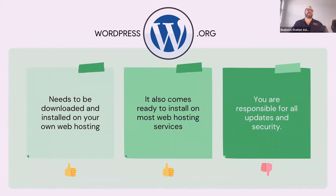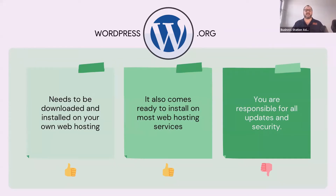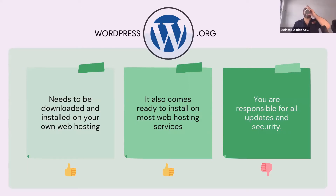WordPress.org needs to be downloaded and installed on your own web hosting — you have to buy web hosting before WordPress can run. It comes ready to install on most web hosting services like SiteGround, Venture IP, DreamHost, HostGator, Bluehost, and even hosts like GoDaddy, NetRegistry, and Crazy Domains. Most web hosts will include it. The downside is that you are responsible for all the updates and all the security, meaning you'll ultimately be called upon to keep everything running.